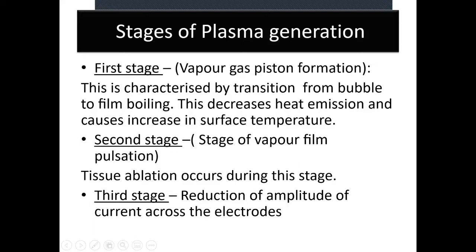It's important we learn these stages because actual tissue ablation happens in stage two. When using the coblation, you have to go on the yellow pedal — on/off, on/off — because if you continuously keep pressing it, there is a reduction in amplitude of current across the electrodes and you won't generate a good plasma field. That is why when anyone teaches you coblation, they tell you to go on and off — so you can get into stage two again and again and develop very good plasma.